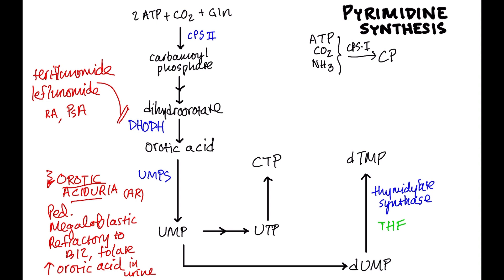Thymidylate synthase can be blocked indirectly by methotrexate. Methotrexate reduces the amount of tetrahydrofolate available, so thymidylate synthase can't work. Specifically, methotrexate blocks the conversion of dihydrofolate to tetrahydrofolate via the enzyme dihydrofolate reductase.